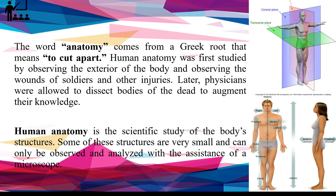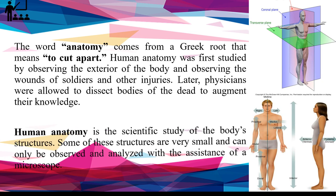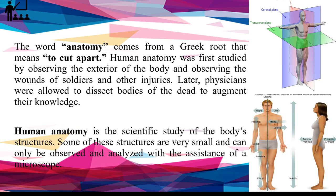The word anatomy comes from a Greek root that means to cut apart. Human anatomy was first studied by observing the exterior of the body and observing the wounds of soldiers and other injuries. Later, physicians were allowed to dissect bodies of the dead to augment their knowledge. Human anatomy is the scientific study of the body's structures. Some of these structures are very small and can only be observed and analyzed with the assistance of a microscope.